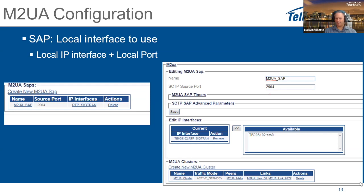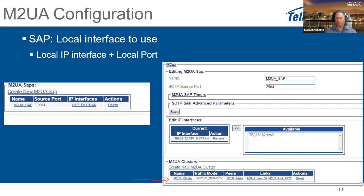In the service access point you need to select an interface that has SIGTRAN enabled. If you have named your IP interfaces correctly, it is easy to choose the right one. Within the service access point, you configure each cluster available in the system. One cluster is typically enough for an MGC connection, but you can have more.